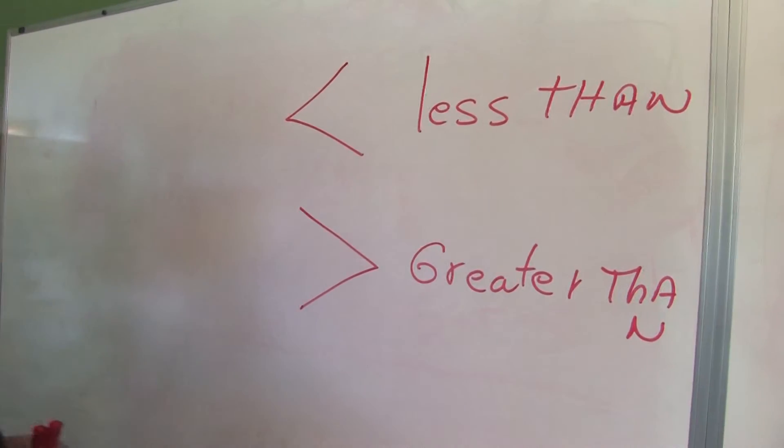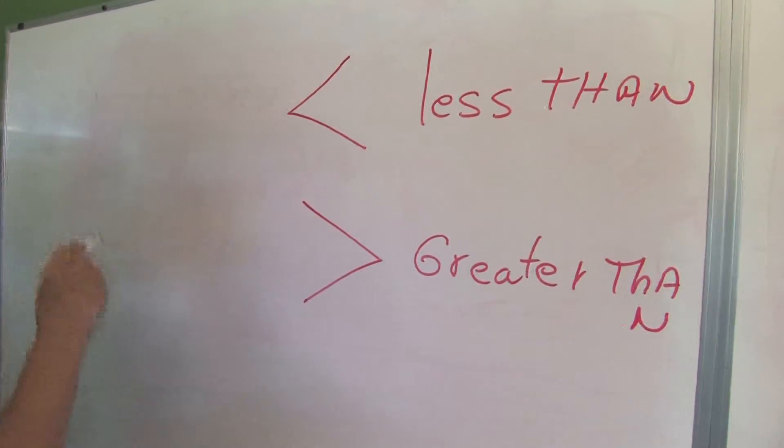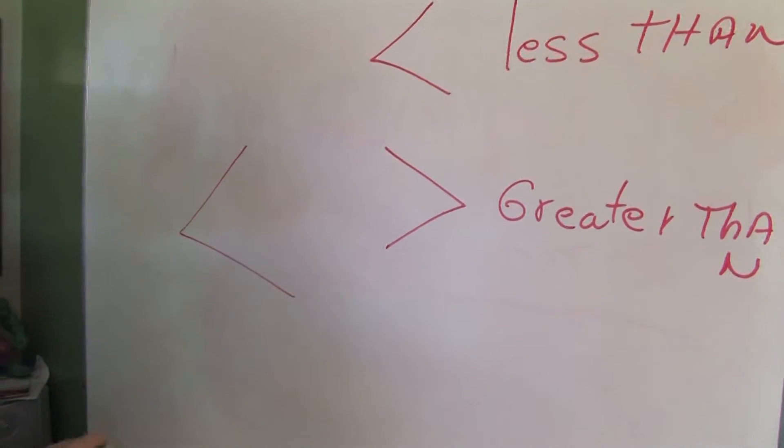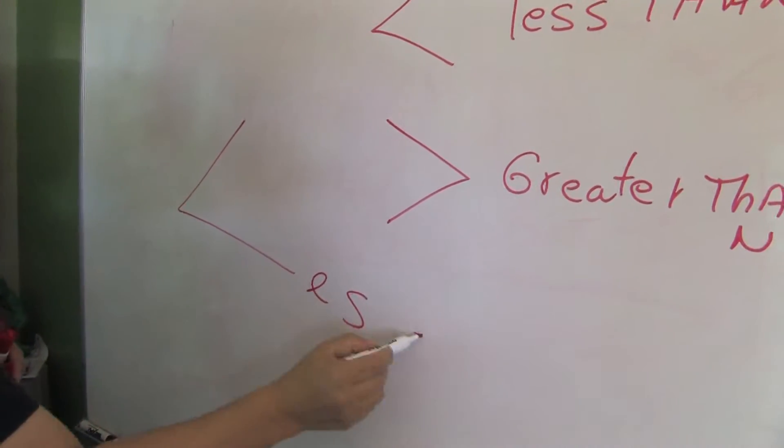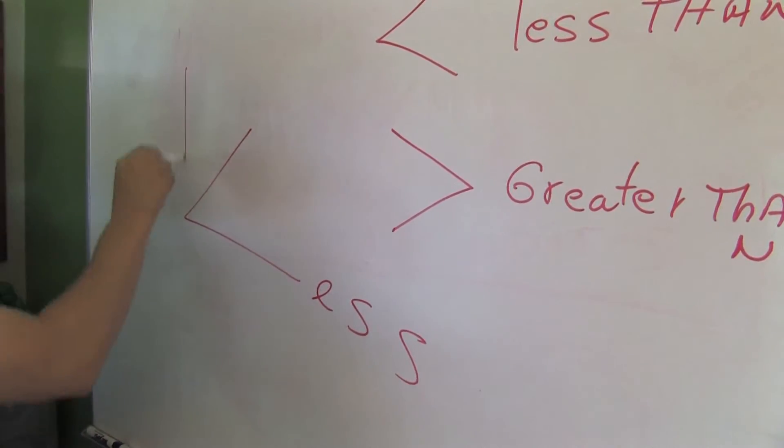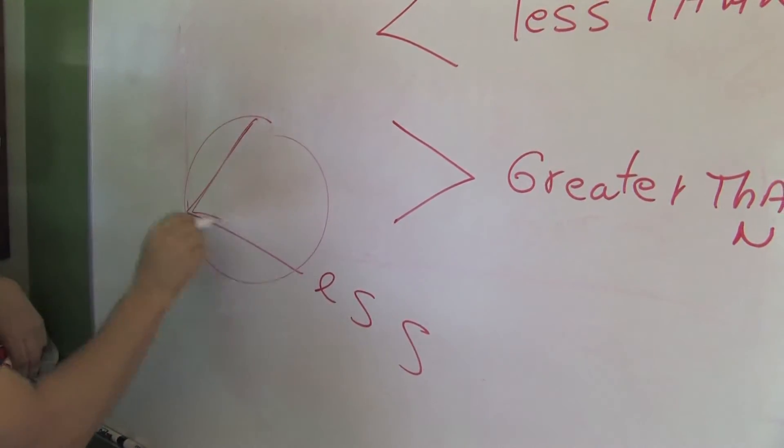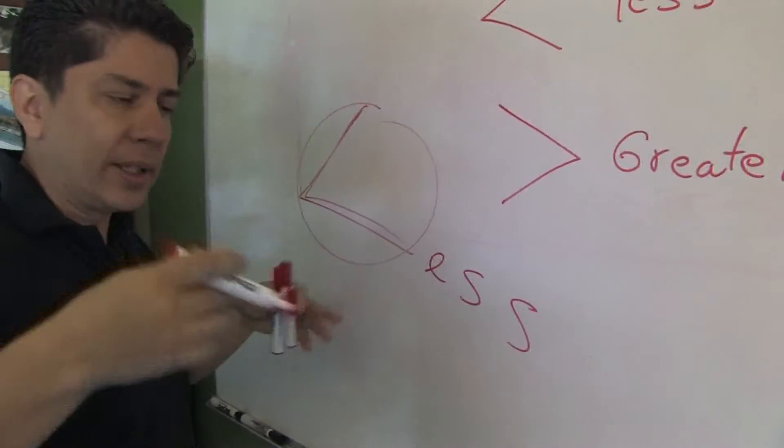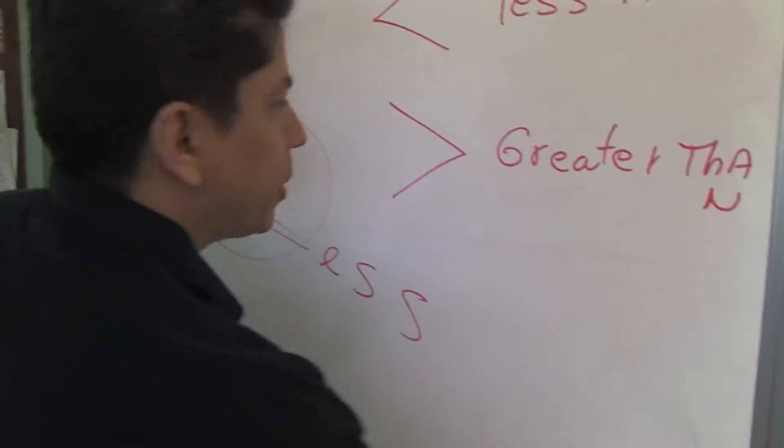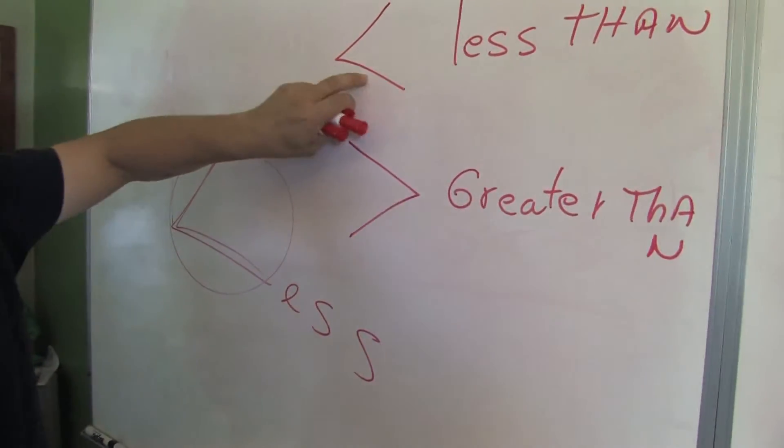Most people have a hard time remembering which is which. Look at this. Think of this as a lazy L, so L for less than. See, there's a lazy L right here, okay? Less than. Forget about that alligator stuff you learned in high school. That's a waste of time for most people. They can't remember. Just think of the lazy L for less than.